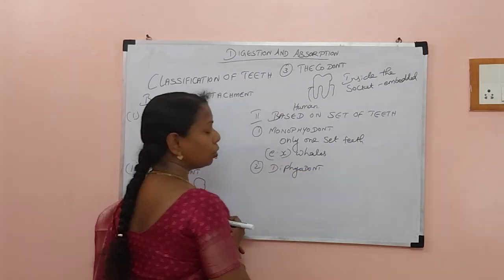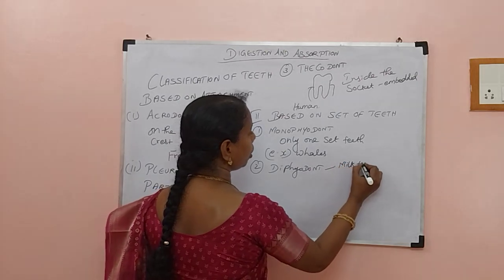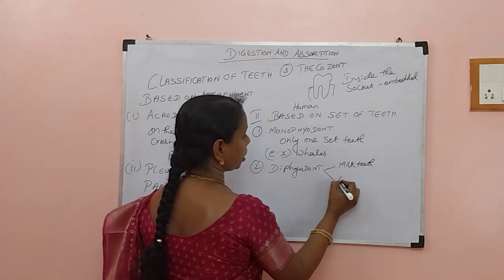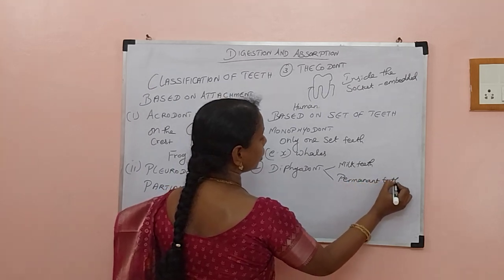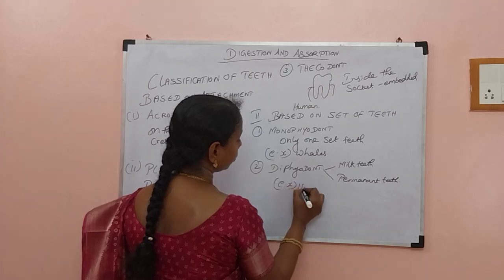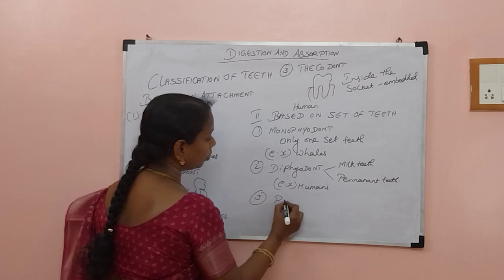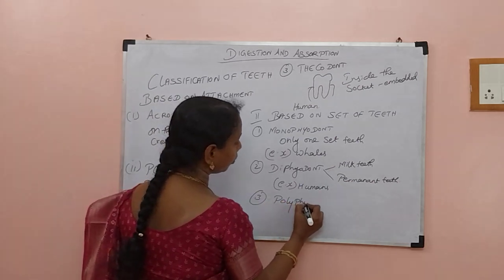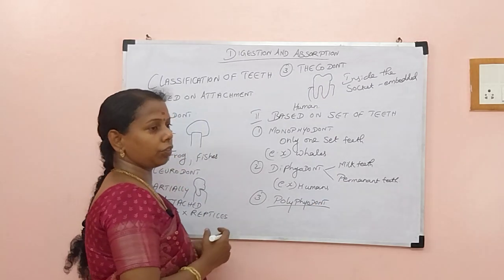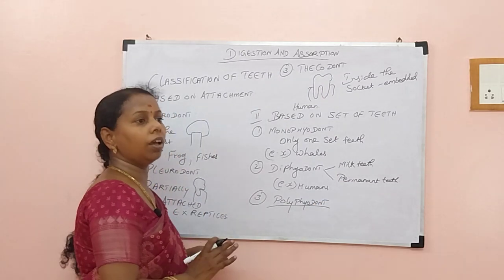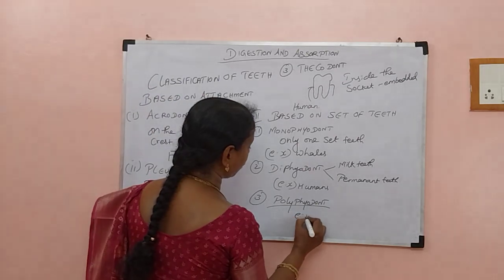In diphyodont, you know, milk teeth will be there until about six years, then they fall off and again rejuvenate as permanent teeth. This we can find in humans. The third type is polyphyodont — they have N number of successions. If the teeth fall off, they will rejuvenate again. Falls off, rejuvenates — possible any number of times. Example: frog.